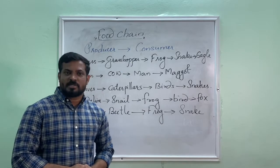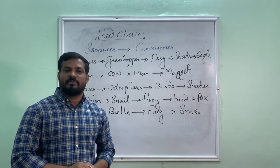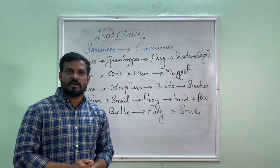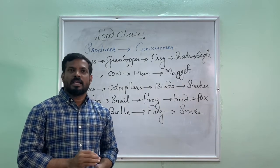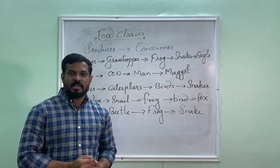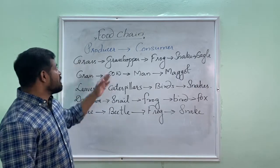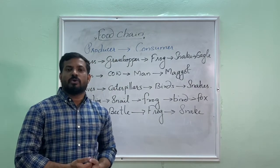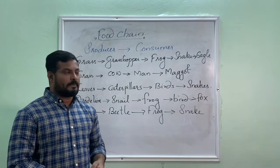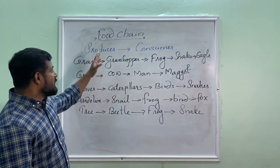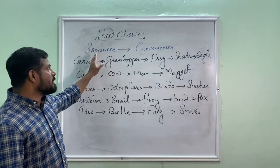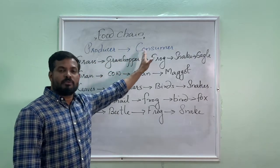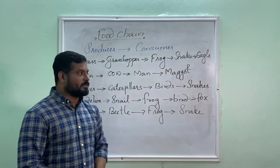A food chain is a description of the way some organisms in a habitat are linked to each other through feeding. In a food chain it begins with a producer and is followed by one or more consumers. That means in a food chain the first part belongs to the producer, then it is followed with one or more consumers.